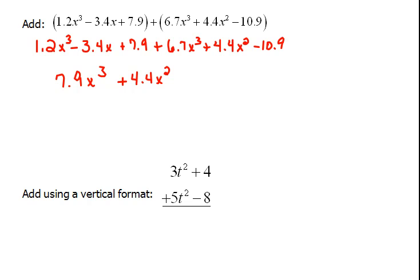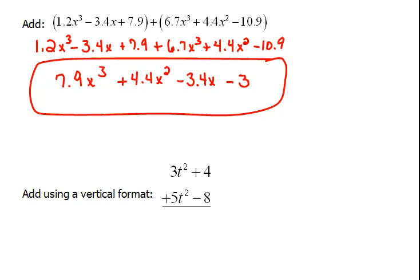Now next in the list would be our plain x's. And it looks like we only have this one plain x term here. So that means we are going to have to write down the minus 3.4x. We don't have anything else to combine it with. Now we have taken care of everything except the constant terms, the plain numbers. So we can combine a 7.9 positive with a negative 10.9. And when we combine that, that gives us a negative 3. So this is our final answer because we cannot do any more combining.